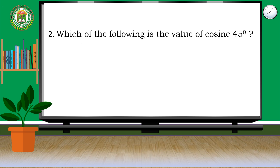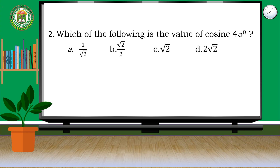Number 2. Which of the following is the value of cosine 45 degrees? Is it A, 1 over square root of 2? B, square root of 2 over 2? C, square root of 2? Or D, 2 square root of 2? If your answer is B, then it's correct!